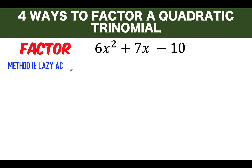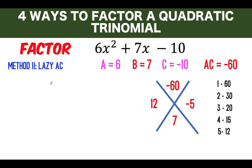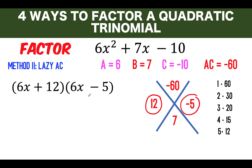In the second method, it's similar to the first but with a modification. Again, identify A, B, C, find AC, then find the two factors — which are again 12 and negative 5. What makes this method different is that it's more of a technique. We begin by copying the coefficient 6 and writing x² as x times x, giving 6x times 6x — even though 6x times 6x does not equal 6x².